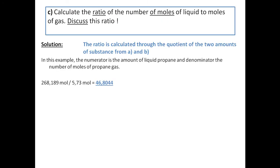In C, you just have to compare these two and discuss the solution. I chose to get a quotient between these two amounts and in the numerator it's the amount of liquid propane and in the denominator the amount or the number of moles of propane gas.